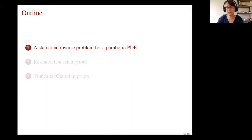I'll first start with Gaussian priors — these are infinite dimensional Gaussian process priors. As a spoiler alert, the convergence rates we get there are not optimal in a minimax sense. I will then consider truncated Gaussian priors. These are something a little more realistic, because in practice when you want to actually solve the problem, you do need to use some type of truncation of your prior anyway.